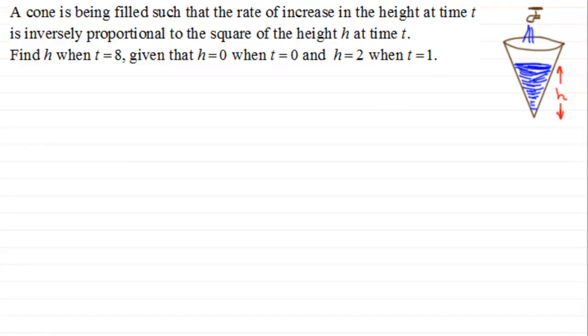How do we do something like this? First of all, we're told that the rate of change of the height, that's dh by dt, is inversely proportional to the square of the height h. So we've got our proportion sign, and because it's inversely proportional, it is proportional to 1 over h squared.